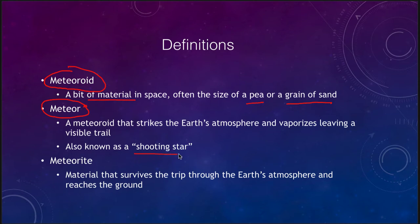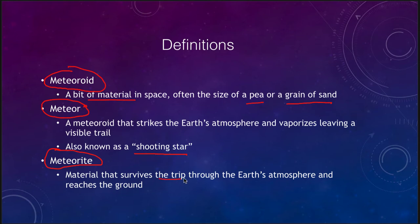When a meteoroid strikes the Earth's atmosphere, it can become a meteor. We also call this a shooting star. The meteoroid strikes the Earth's atmosphere and vaporizes, leaving a trail that we can actually see. So when you see a shooting star, it has nothing to do with a star — it has everything to do with small solar system debris burning up in the Earth's atmosphere.